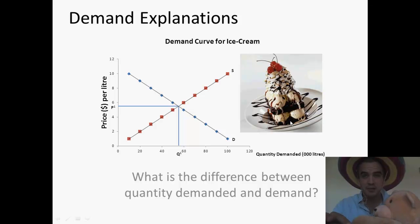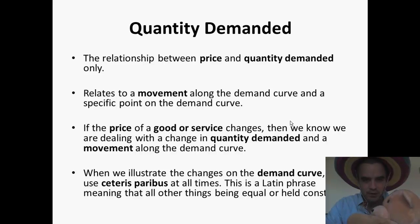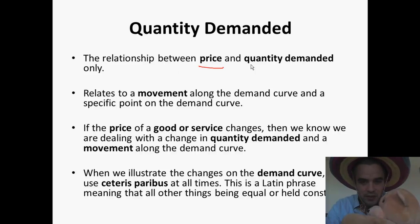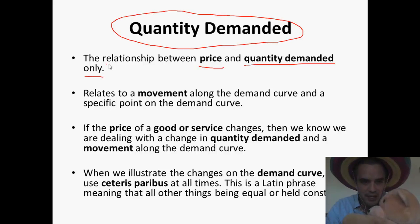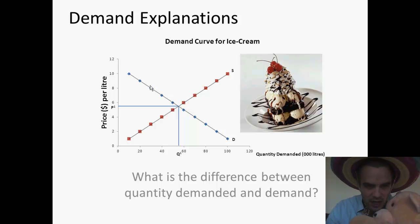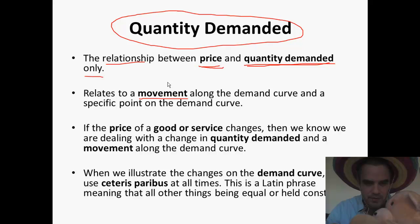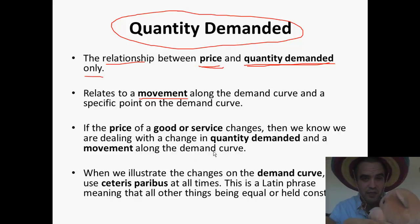We'll be focusing our demand on ice cream, because I know you all love ice cream. Quantity demanded is the relationship between price and quantity demanded only. It relates to a movement along the demand curve — it's going to result in a movement along it this way or this way.